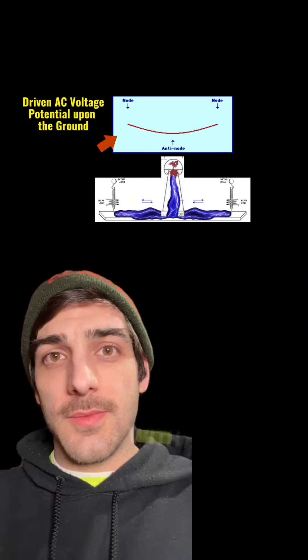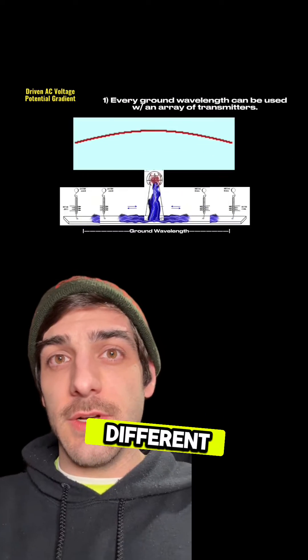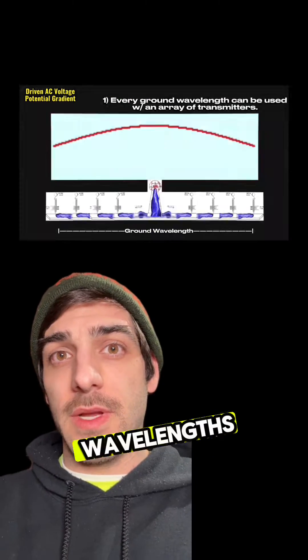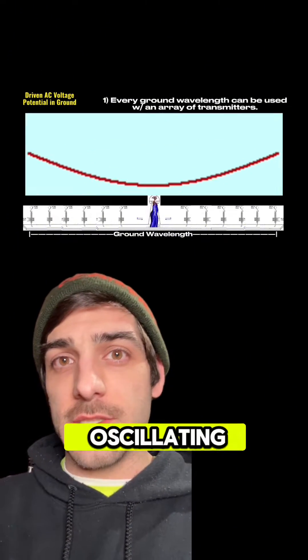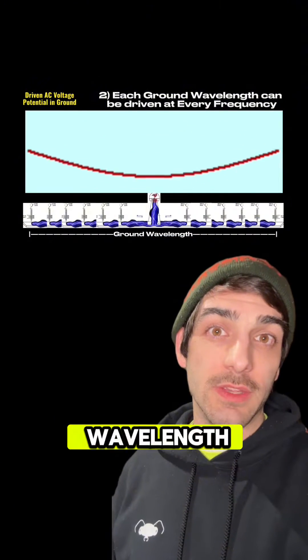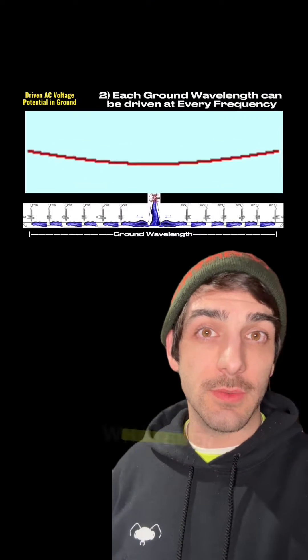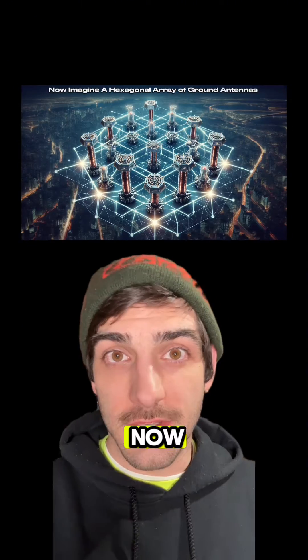A quick lesson in Nikola Tesla's multi-point antenna transmission. With multiple antennas we can create different alternating current wavelengths of electron charges oscillating within the ground. Additionally, each wavelength can be driven at whatever frequency we desire.